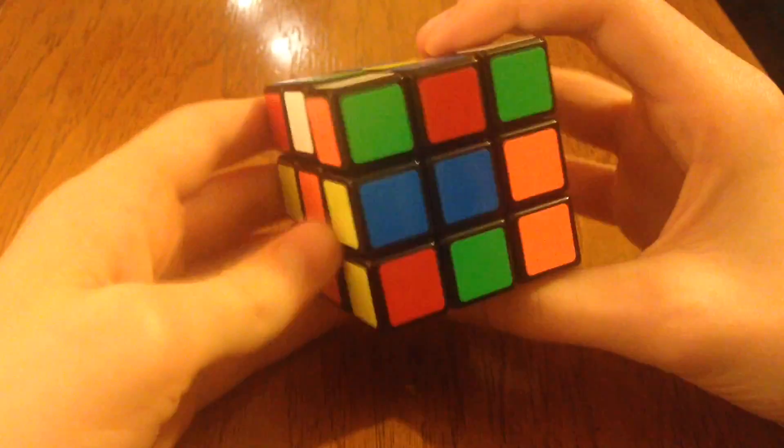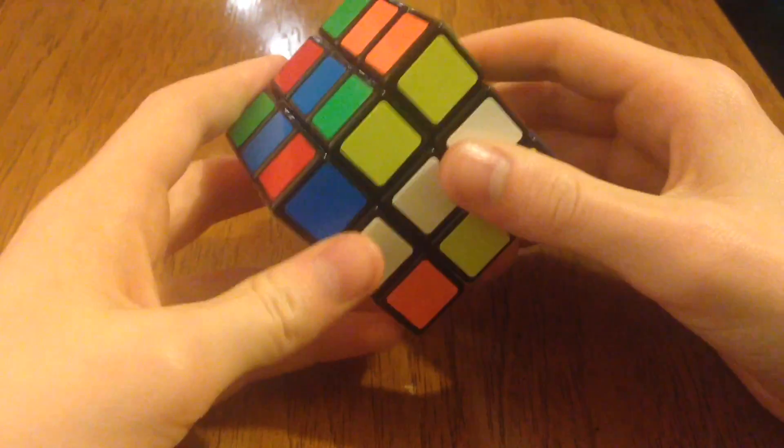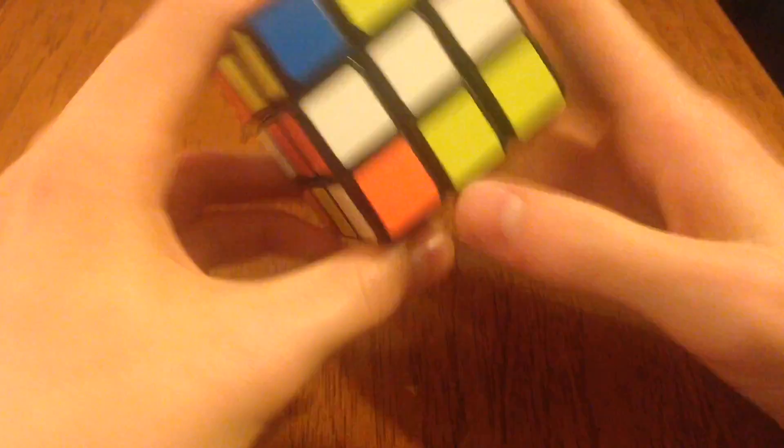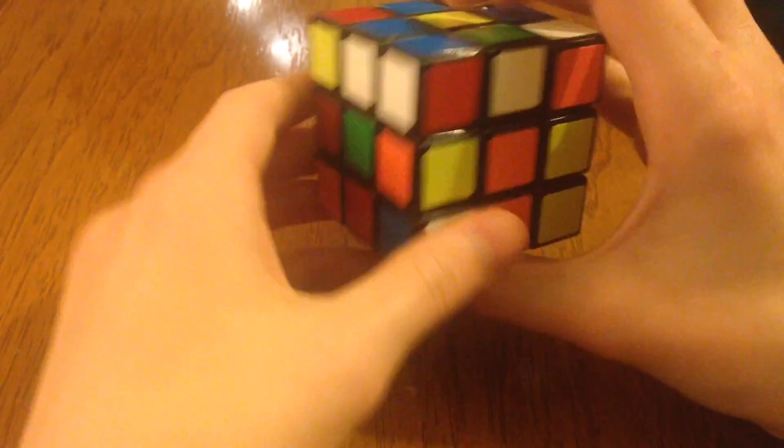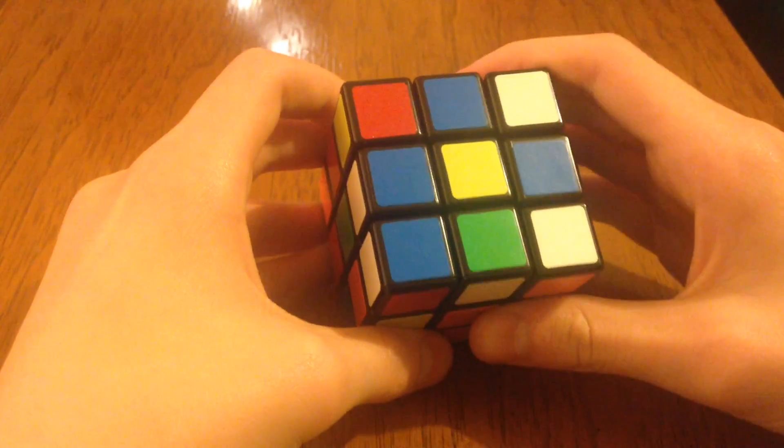The first step is solving the white side. The second step is getting these two layers. And the third step is solving the top side. And we'll be done.